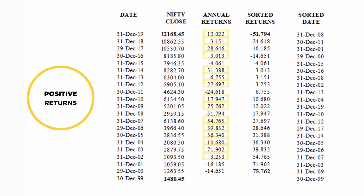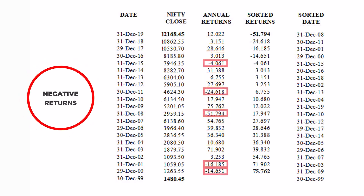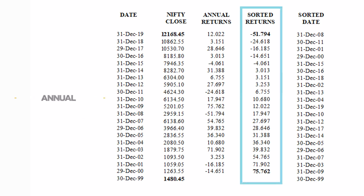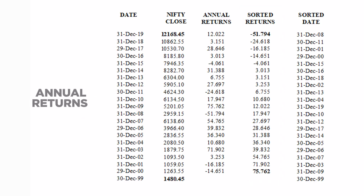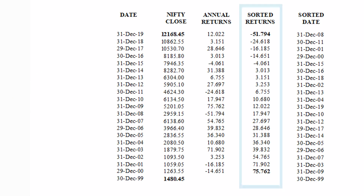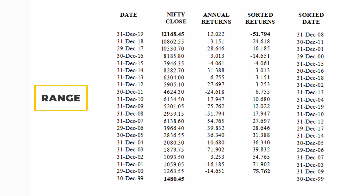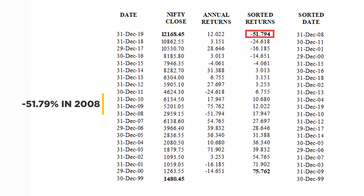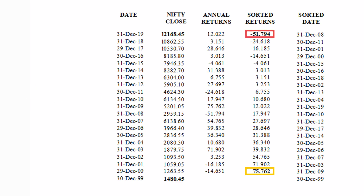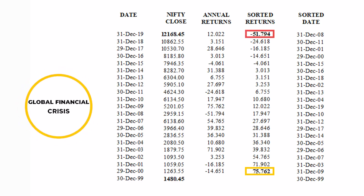You see some years with positive returns and some with negative returns. Column 4 of this table sorts these annual returns in ascending order, and you see the spread in returns more clearly. This spread is statistically known as the range. The extremes are about negative 52% in 2008 and positive 75% in 2009 — wild swings, but those were the years of the global financial crisis. Take them out and there is still some annual variation.